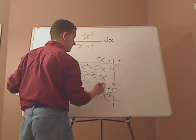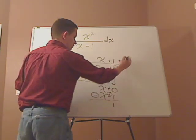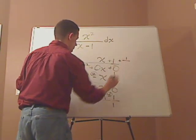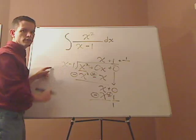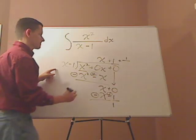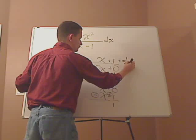So with the remainder, what you do is take the 1 and put it over whatever you divided it by. So it would be x minus 1.